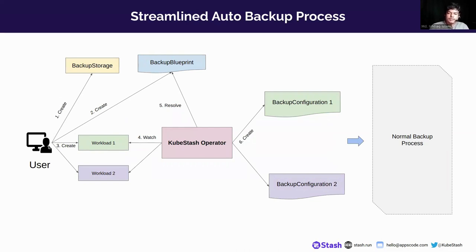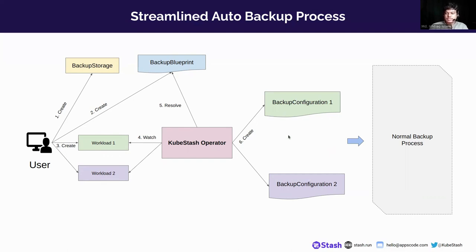Let's see the streamlined autobackup process. First, the user will create backup storage, then create the backup blueprint and the workloads. The Kubestash operator will then resolve the backup blueprint by watching the workloads, and the variables used in the blueprint will be resolved from the annotations used in the workloads. Then the Kubestash operator will create the backup configuration, and from this point the normal backup process will be applied.